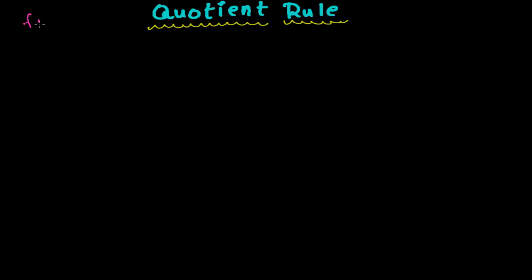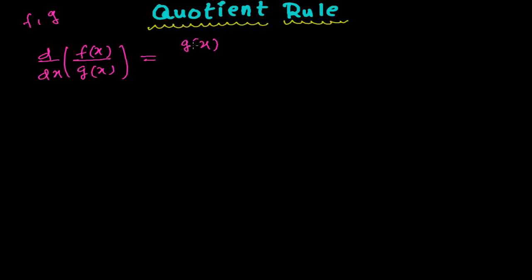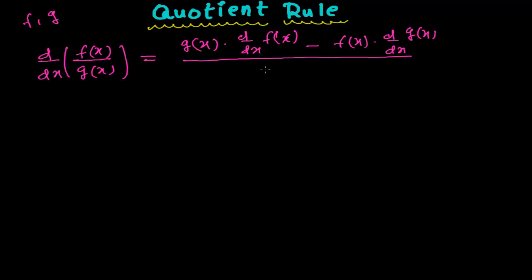To understand this, let me take two functions F and G. We have to find out the derivative using the quotient rule — simply, the derivative of the function when one function is being divided by the second function. Here F(x) is being divided by G(x) and we have to find out the derivative. It equals the second function times the derivative of the first function, minus the first function times the derivative of the second function, whole divided by the square of the second function.